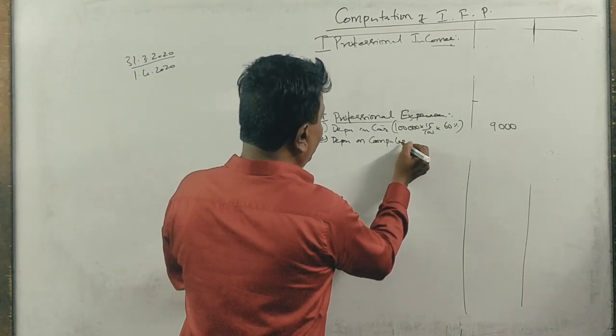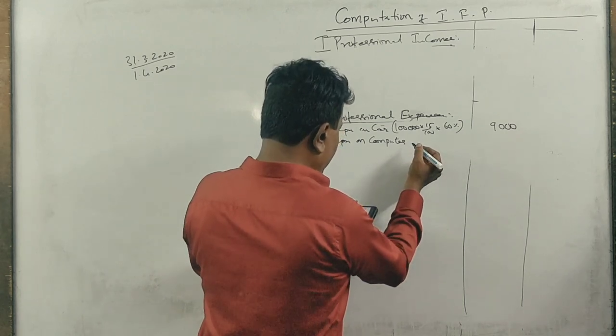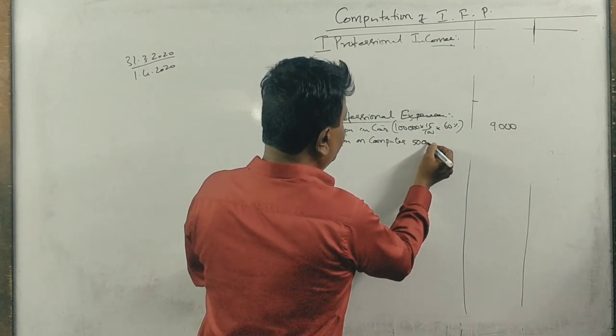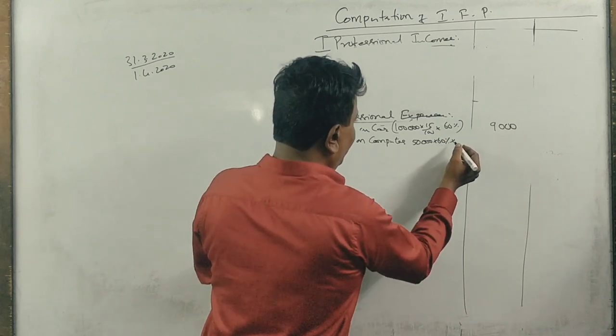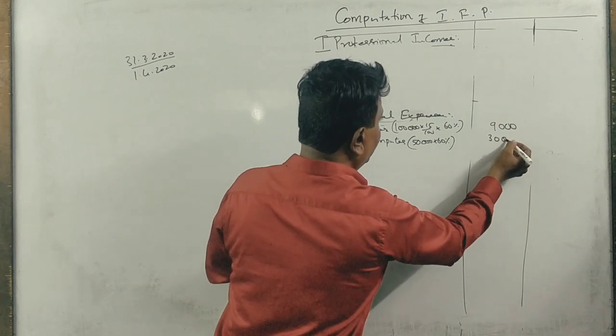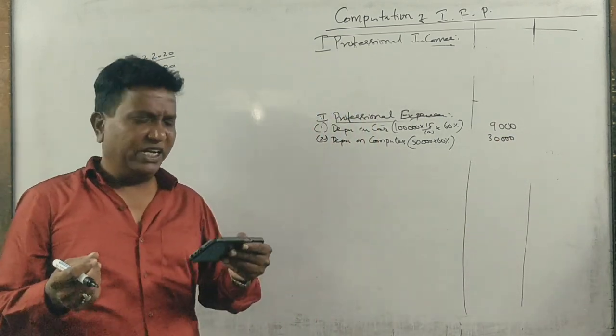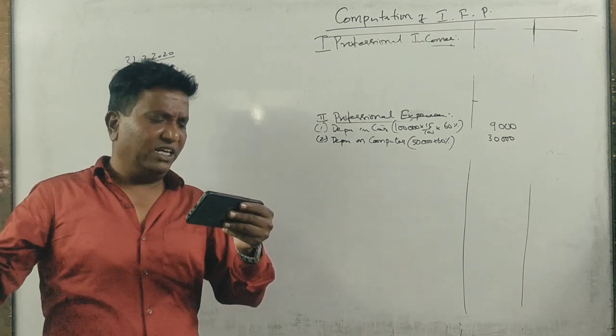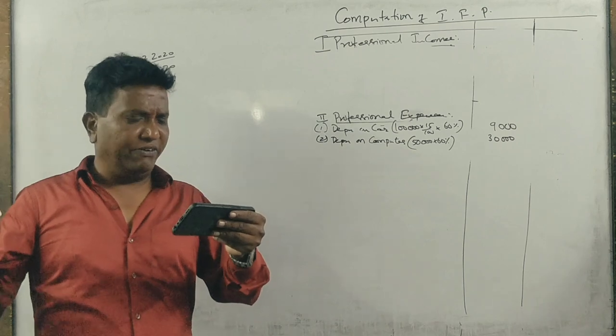So depreciation on computer. What is it? 50,000 into 60% into 8 by 12. Next, surgical equipment.